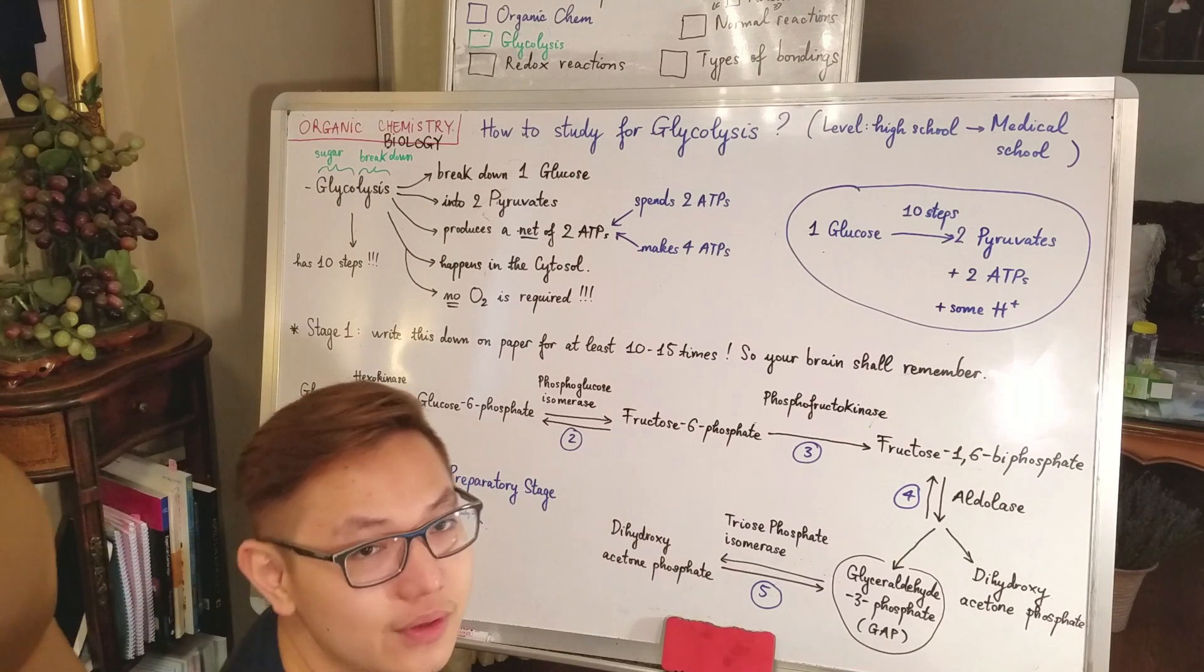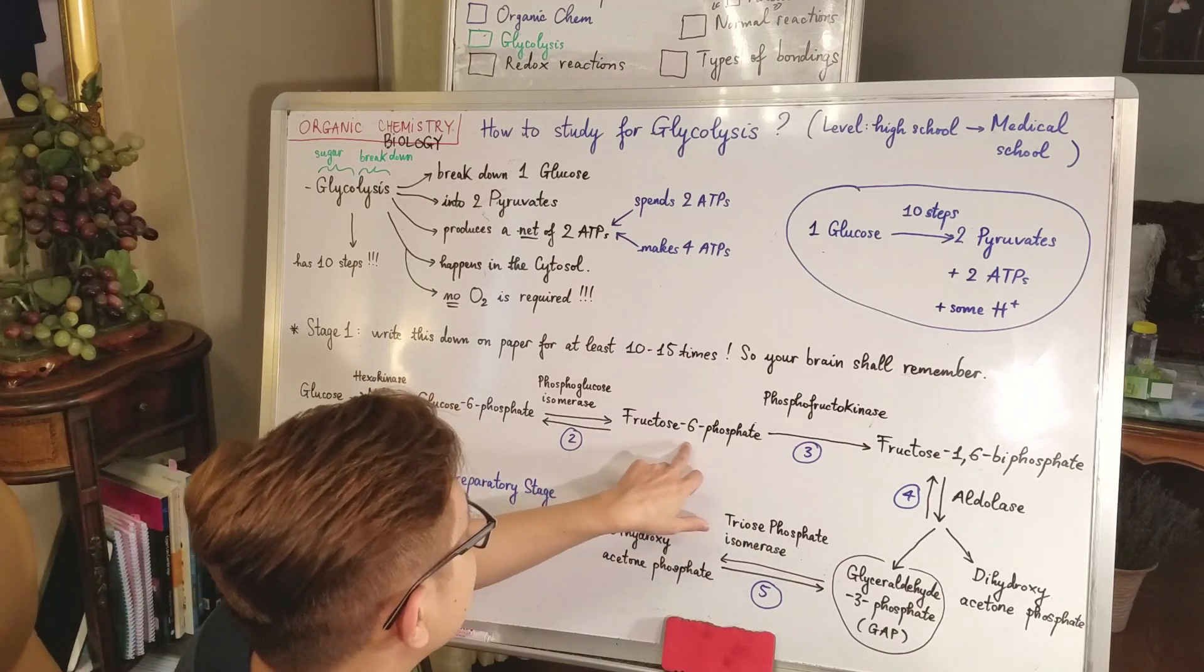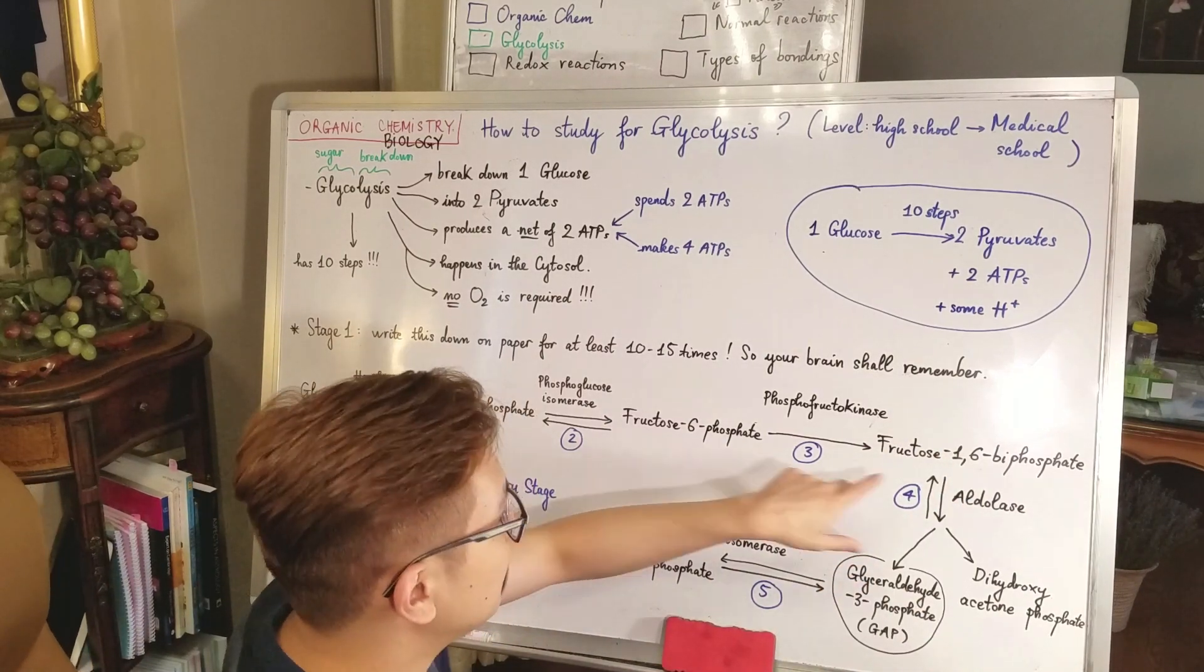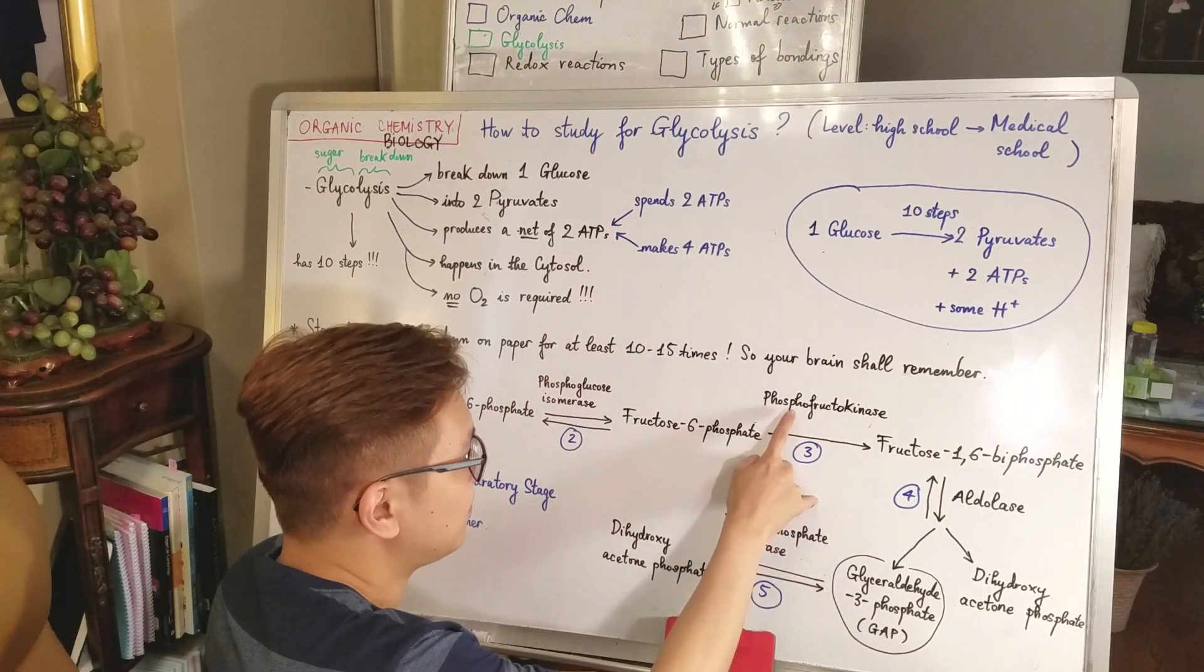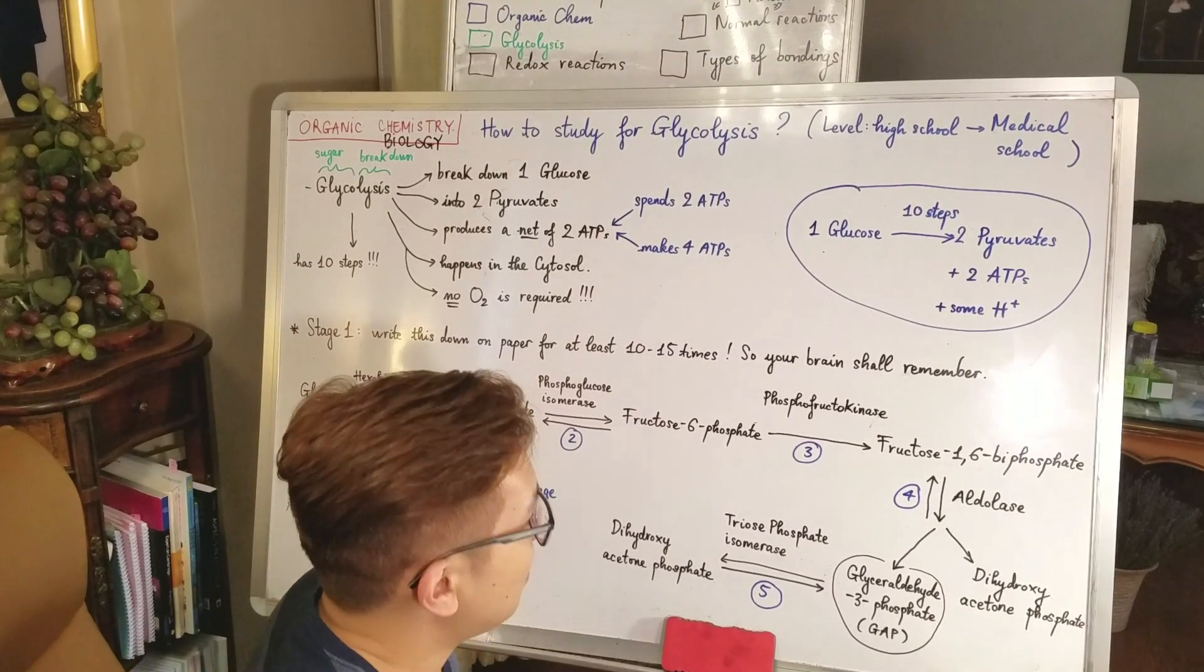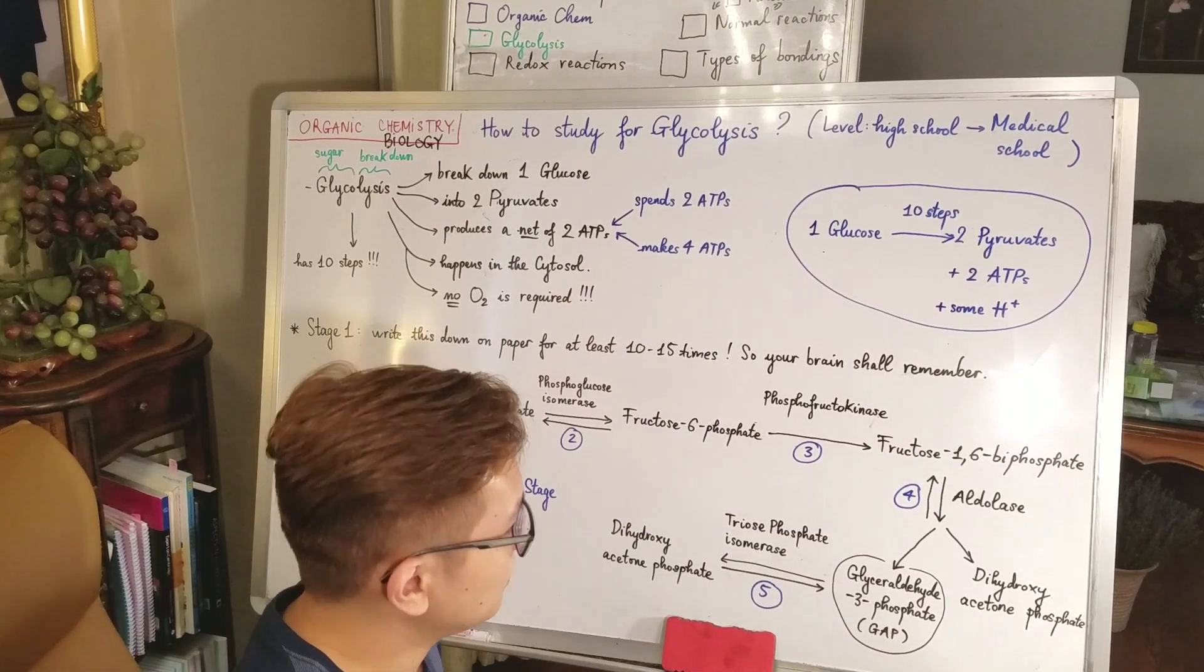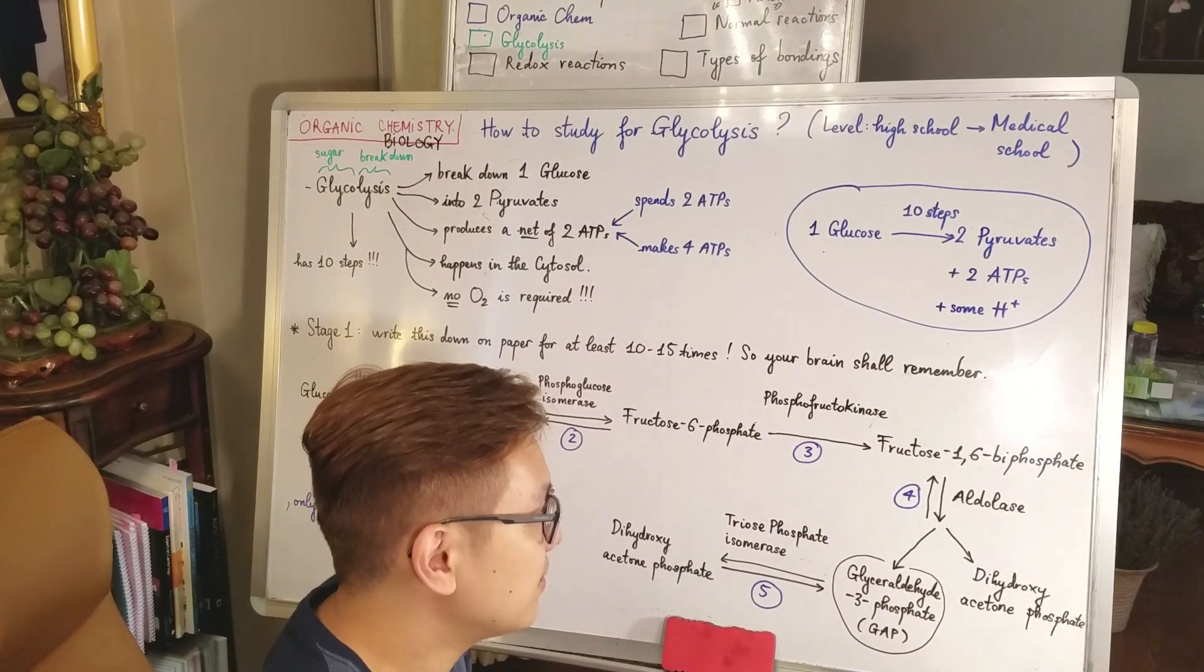I'll go into details as you watch this video further. Now step three, fructose 6-phosphate to become fructose 1,6-bisphosphate. You see you're adding another phosphate group in there. You use the enzyme phosphofructokinase. Then from step four, fructose 1,6-bisphosphate splits into two different things. The enzyme is called aldolase.